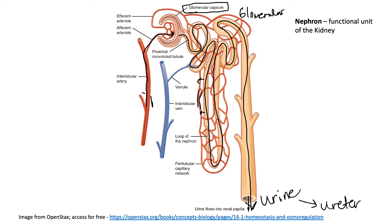Not everything that entered the tubule will leave as urine — some of it is good and the body reabsorbs it. As fluid travels along the tubule, things like water, glucose, proteins, and amino acids are constantly being reabsorbed back into the capillaries. Everything reabsorbed goes back to the renal vein and returns to the heart, remaining in the body. Other things — nitrogenous waste, some salts, some toxins — continue through the tubule and eventually become urine, exiting through the ureter.